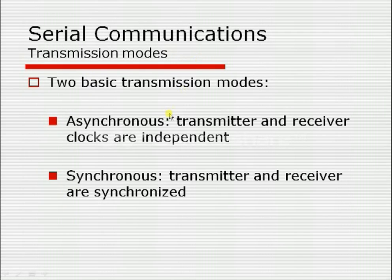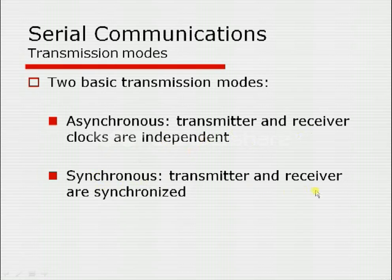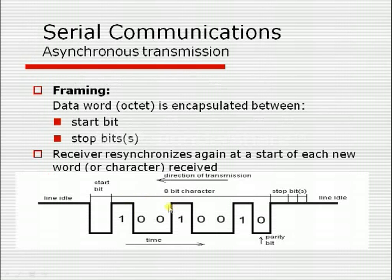There are two transmission modes in serial communication: asynchronous and synchronous. In asynchronous transmission, the transmitter and receiver are connected to different clock sources, but the clock values must be the same since synchronization is done only with those clocks. In synchronous transmission, the transmitter and receiver are synchronized with the same clock — one device generates the clock (the master) and the other receives it (the slave).